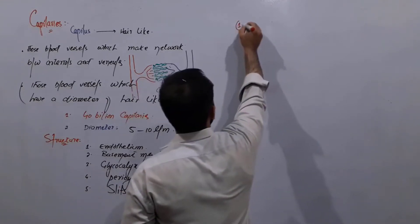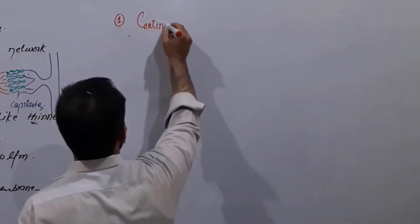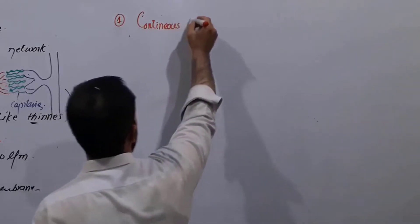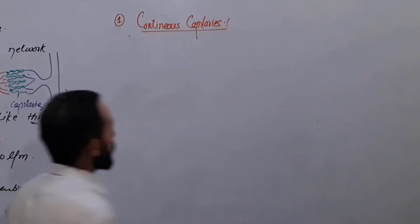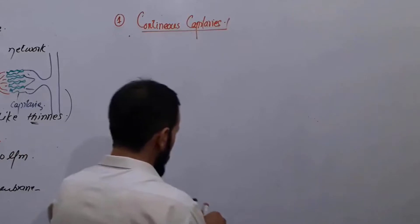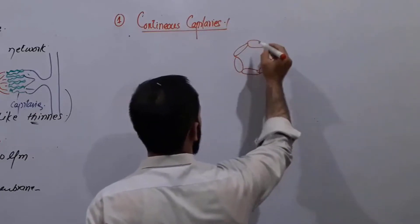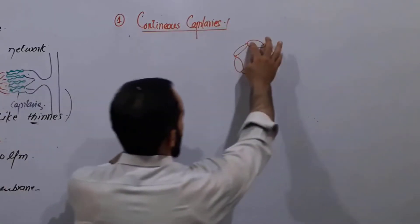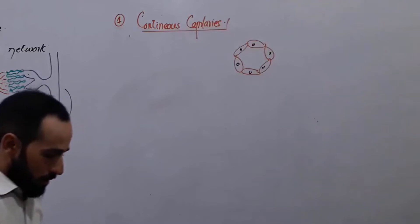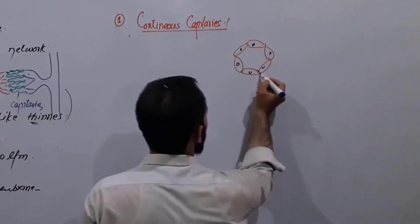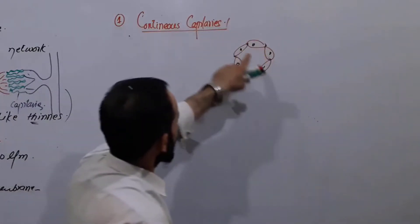The first type of capillaries are continuous capillaries. As we know that capillaries have endothelial cells. This is a simple diagram just to clear our concept — these are the endothelial cells of the capillary. You can see here that there are no gaps in between these cells. That's why we call these continuous capillaries.